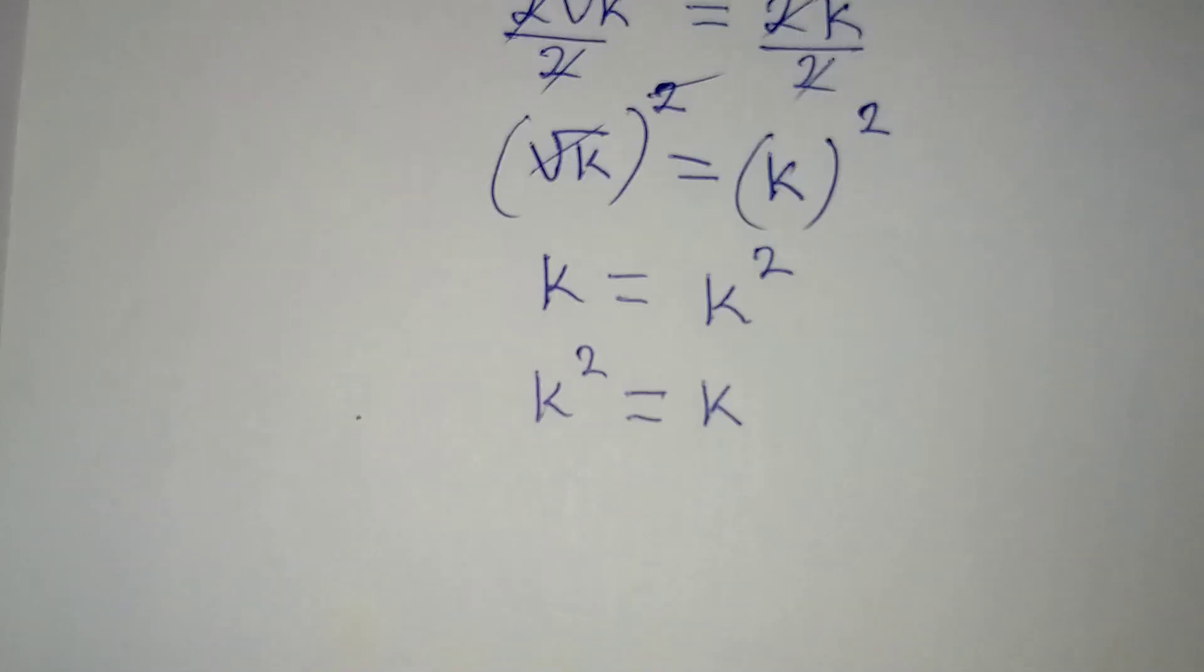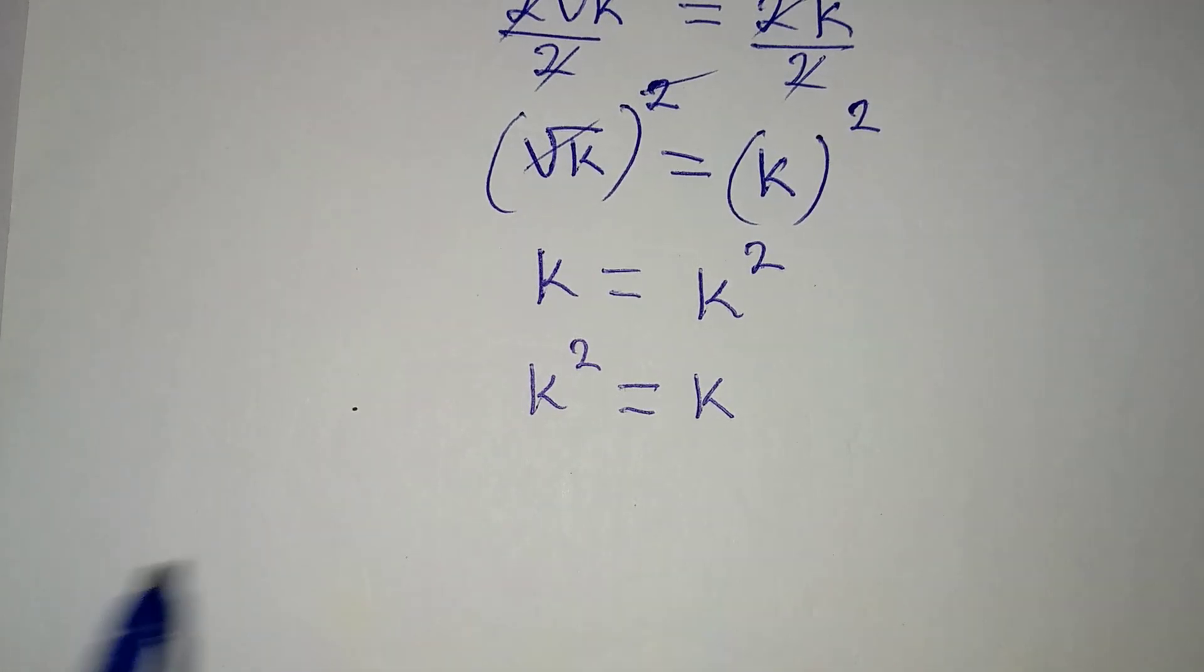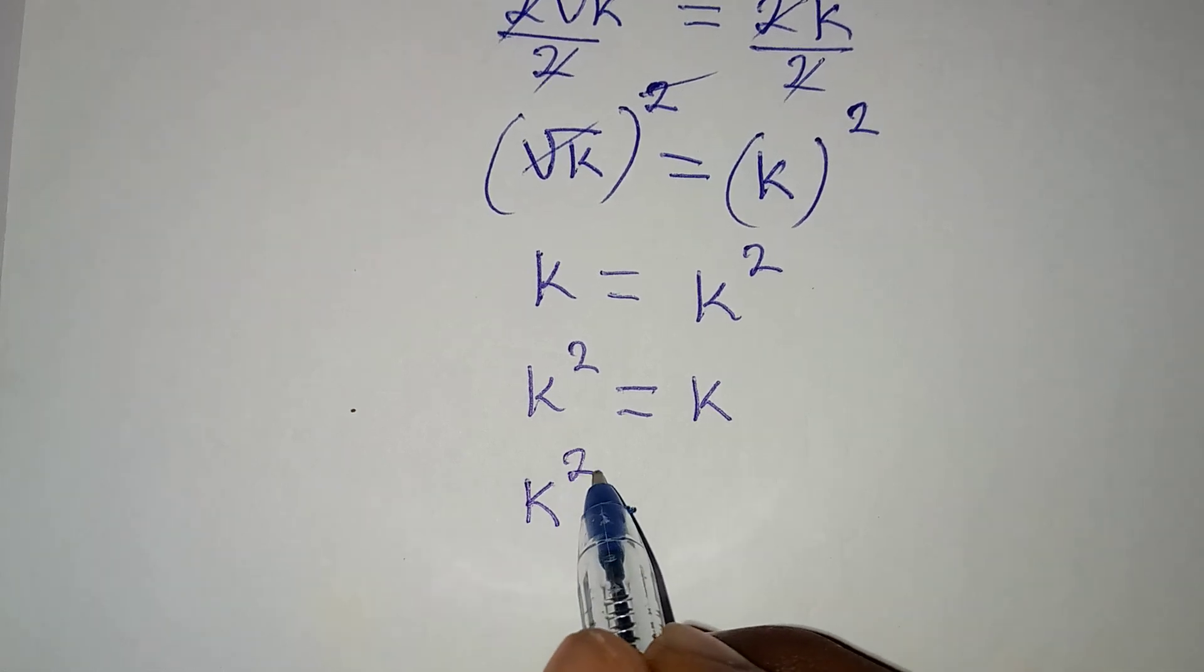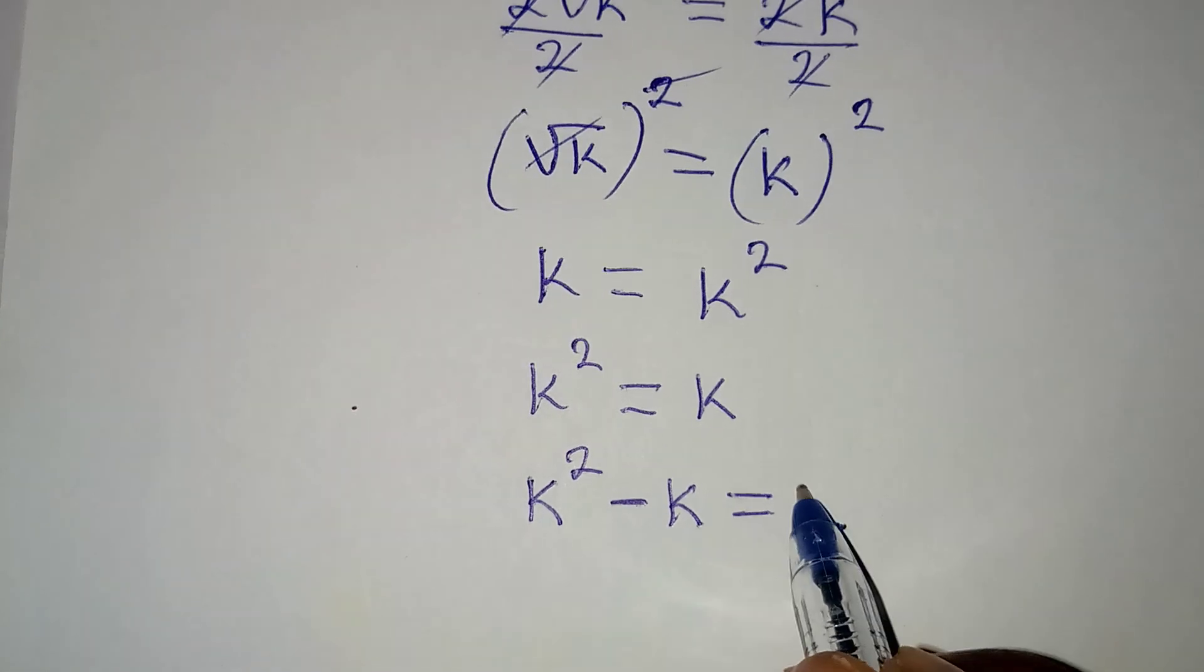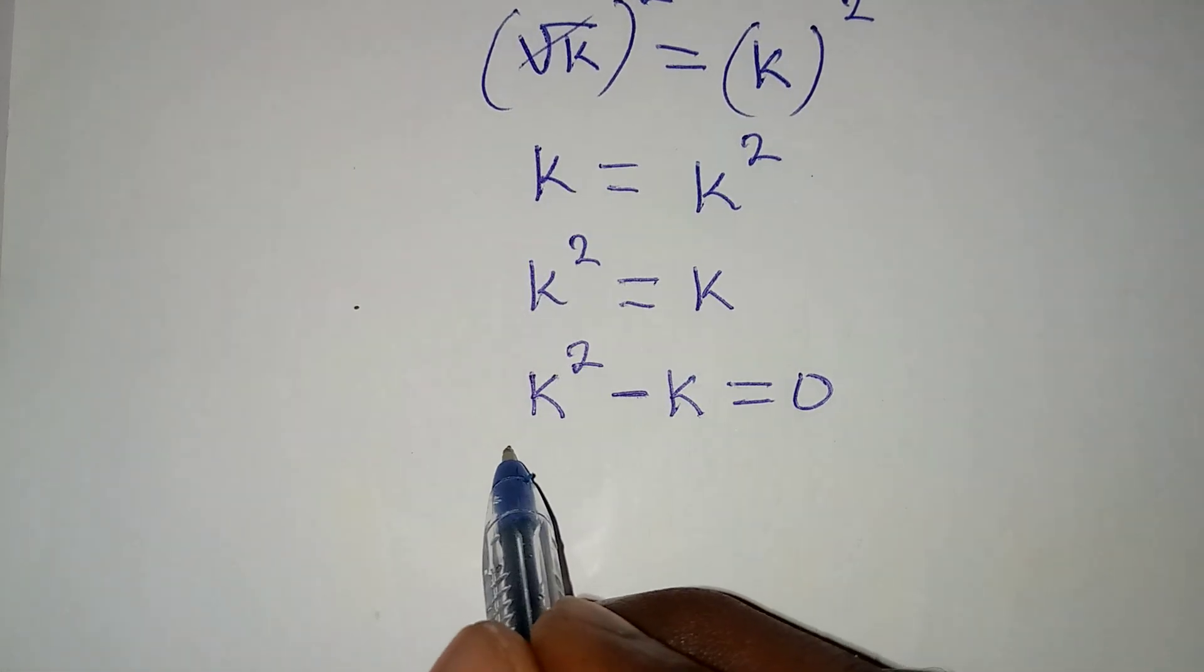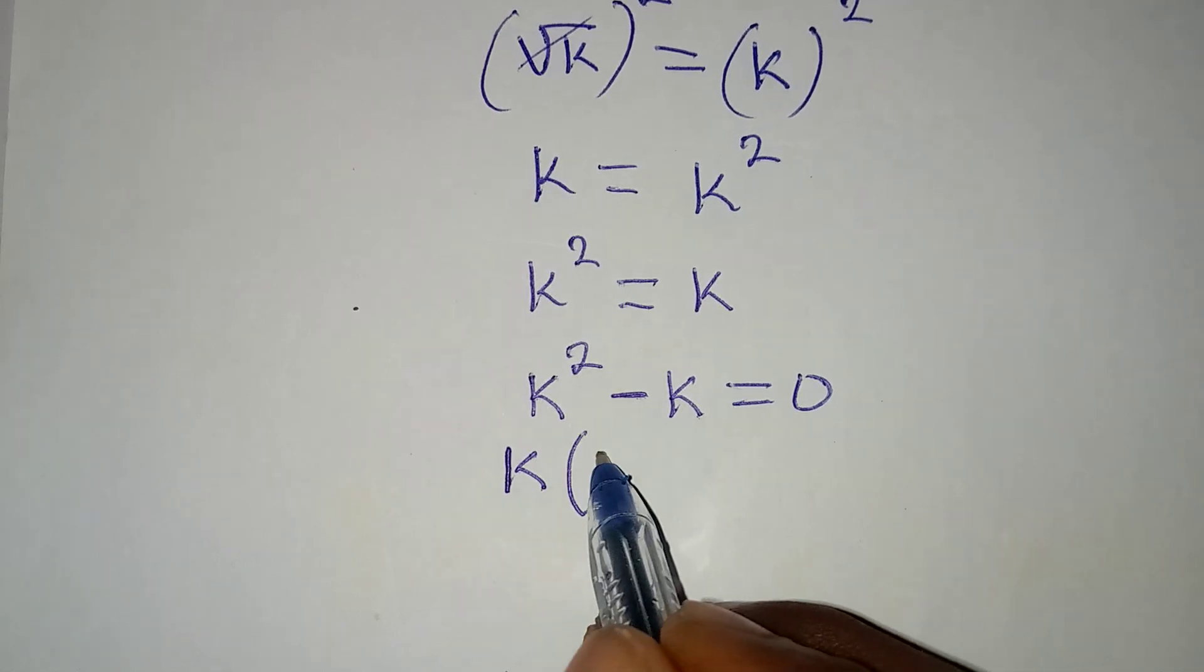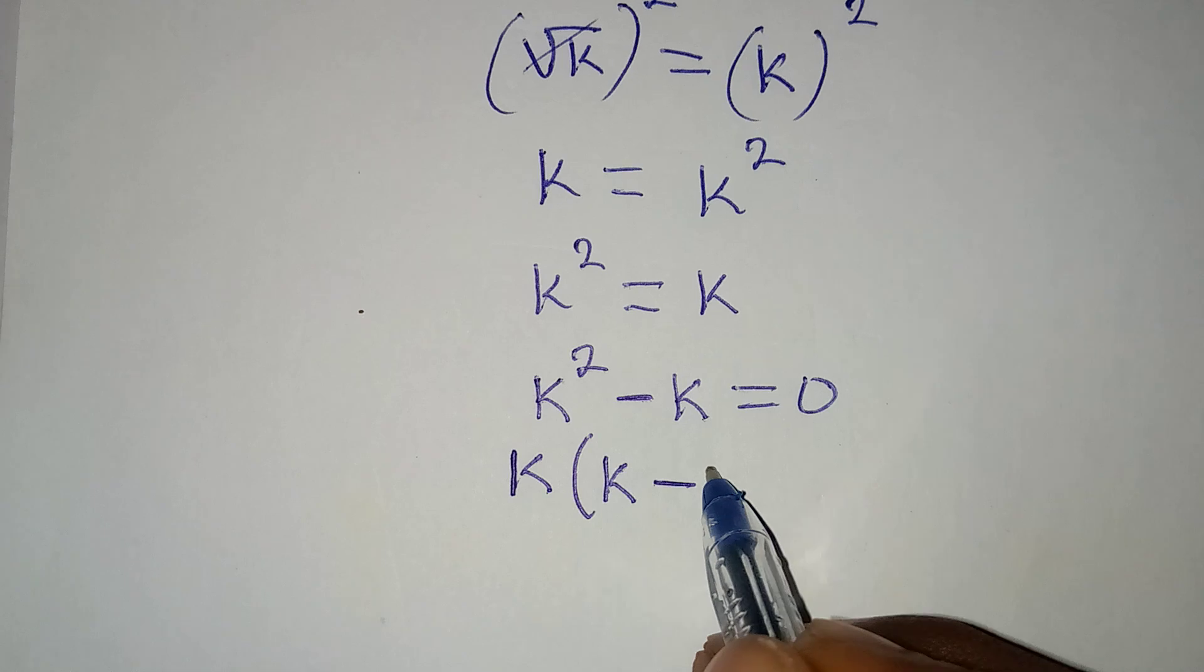And the next thing I'm going to do is to bring everything to the left - remember we now have a quadratic equation. So k squared minus k is equal to zero, and then from here k is common. I have to factor it out, so k will come out, then in here I'll have one k minus k into k will give one.